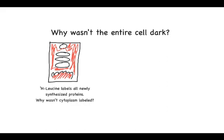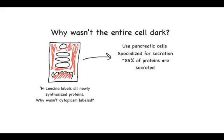The trick was find a cell that does lots of secretion. Because then most of the protein synthesis is being moved into the ER, like a cell that makes tons of insulin, like a pancreatic cell. 85% of the proteins in pancreatic cells are secreted. So almost all the protein translation, not all of it but the vast majority, is going through the secretory pathway.